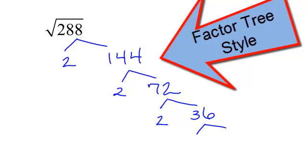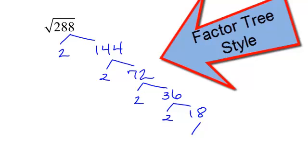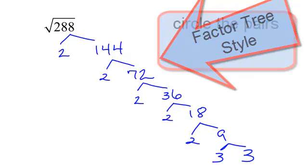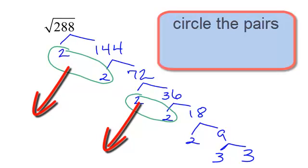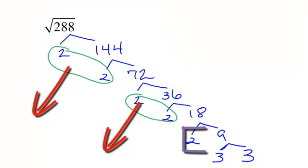Maybe you could stop now because you knew 36 was 6 times 6. If not, you would just keep going. 18 is 2 times 9. And then 9 is 3 times 3. And I would circle my pairs of numbers. So, I have a pair of 2s. Another pair of 2s. That 2 does not have a partner. And I have a pair of 3s.